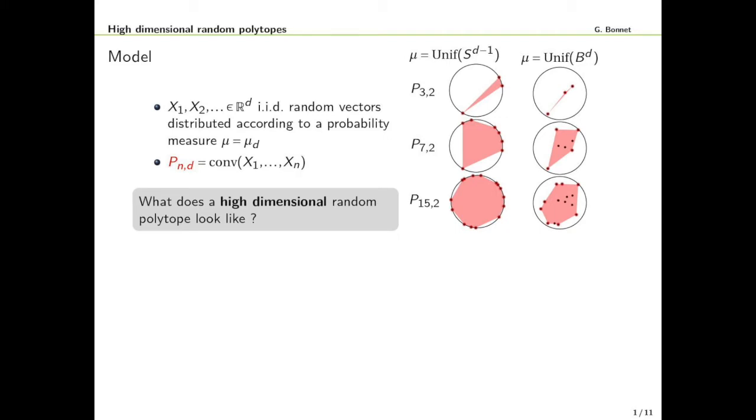The general model is the following. You consider a sequence of IID real random vectors and you take the convex hull of N of them. Then we want to investigate the question: what does a high-dimensional random polytope look like? This construction is illustrated in dimension 2 in the case of the uniform distribution on the sphere for the left column and the case of the uniform distribution on the ball for the right column.